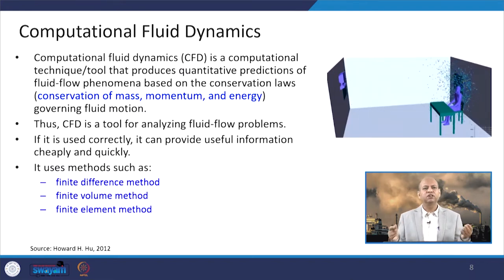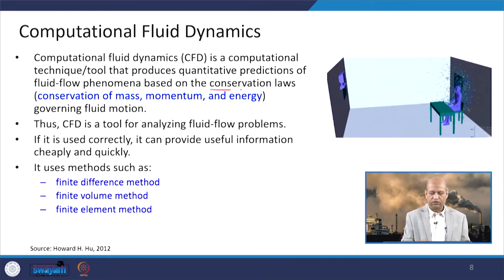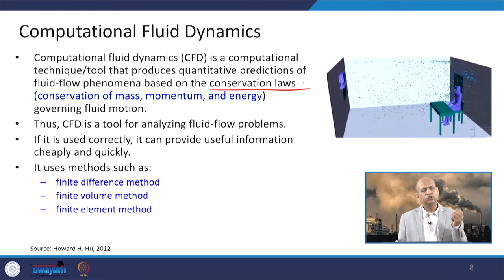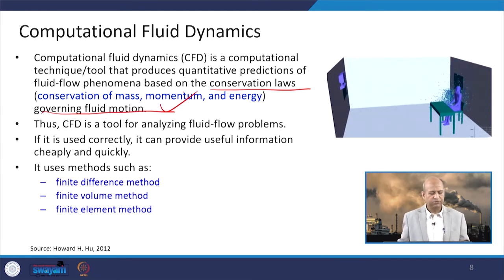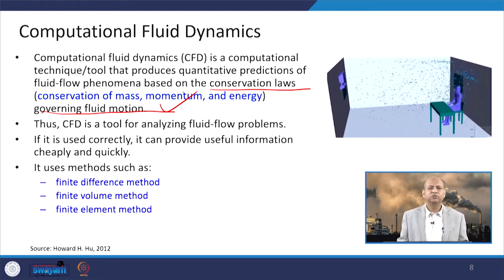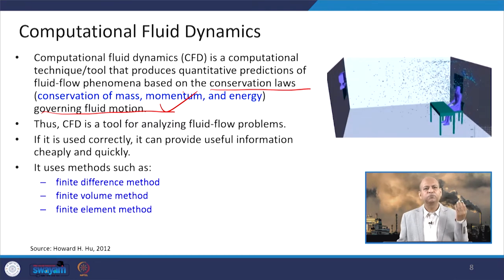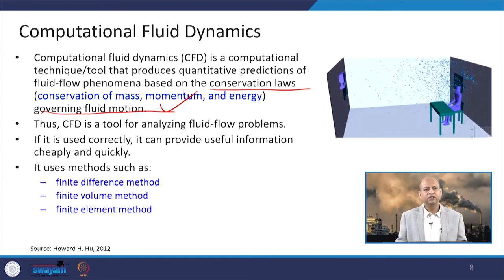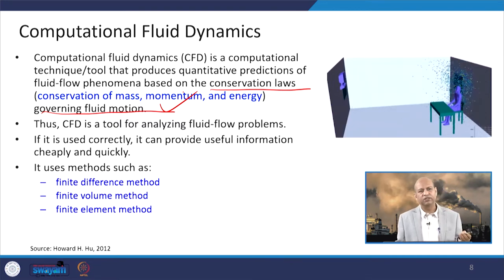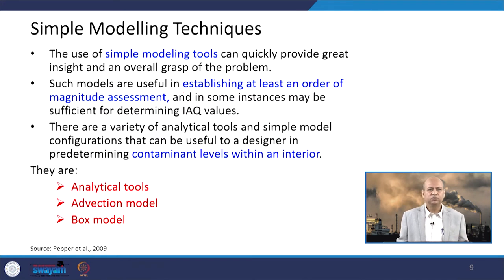CFD is a computational technique or tool which produces quantitative predictions of fluid flow through conservation laws — conservation of mass, conservation of momentum, and conservation of energy. These basic principles govern fluid motion and are used for CFD techniques. So CFD is a tool for analyzing air fluid or air flow problems. When used correctly, it can provide useful information very quickly and with minimum resources — basically just a computer to run the model and get results. It can use different methods like finite difference method, finite volume method, or finite element method.